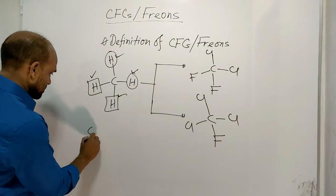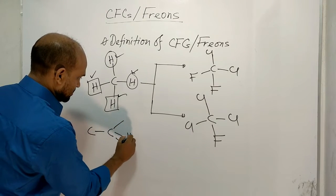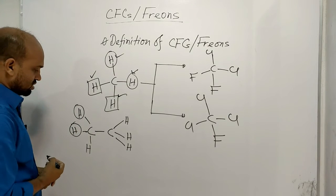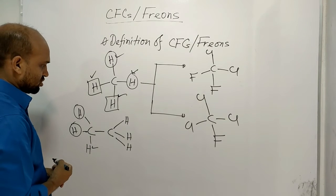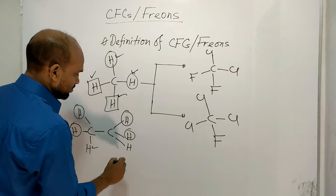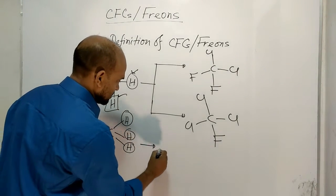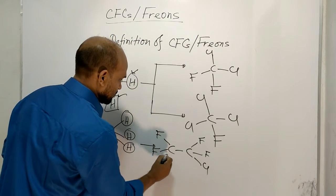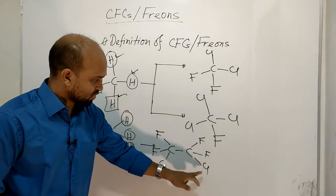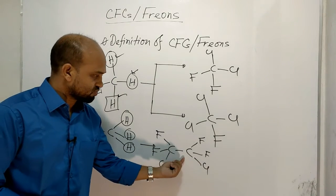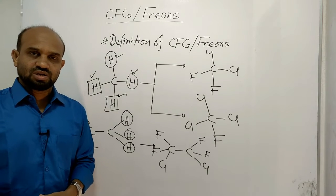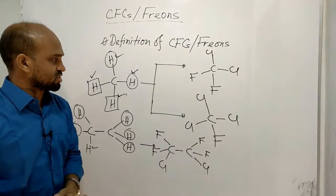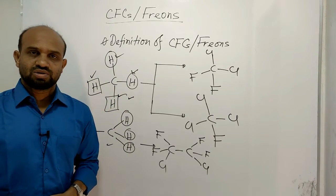Another compound — starting with ethane: two hydrogen atoms are replaced by fluorine and one by chlorine on one carbon, and similarly two are replaced by chlorine and one by fluorine on the other carbon. This gives us fluorine, fluorine, chlorine on one side and fluorine, fluorine, chlorine on the other. This is also a chlorofluorocarbon obtained from ethane.